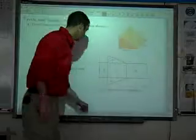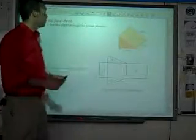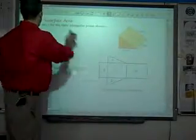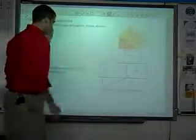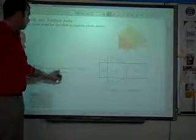Okay, here's an example for finding the surface area of a triangular prism. The instructions say draw a net for the right triangular prism shown. After that, we will use the net to find the surface area of the triangular prism.